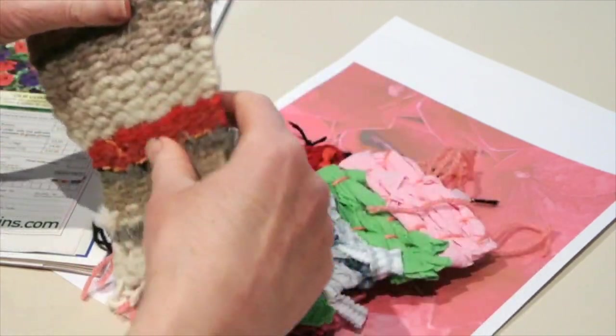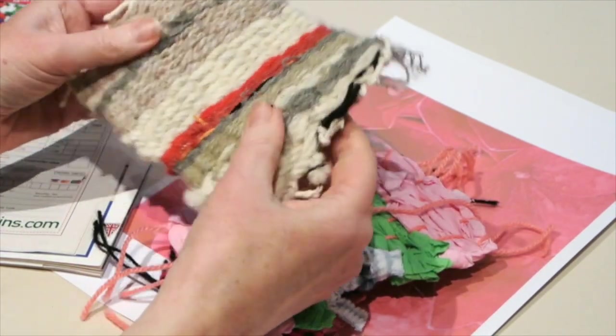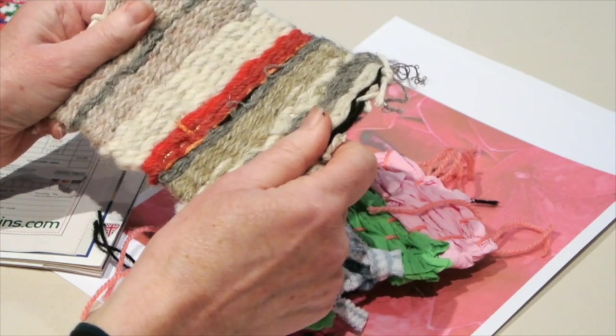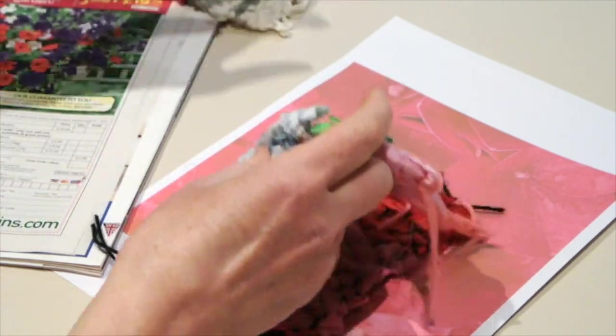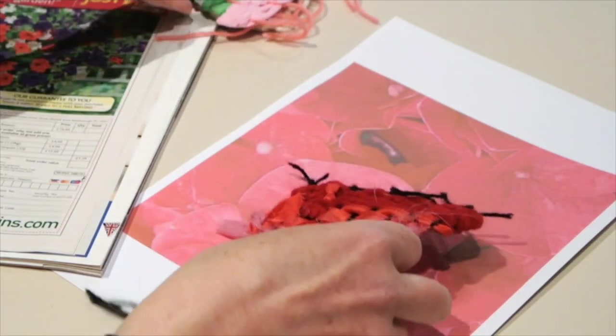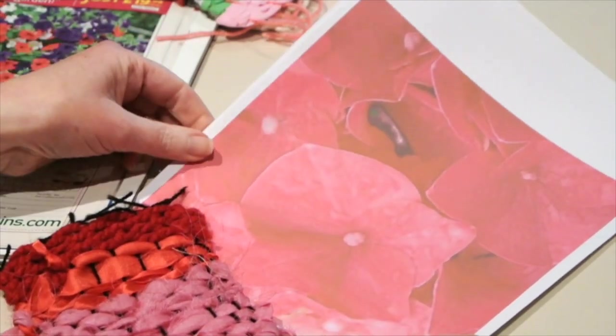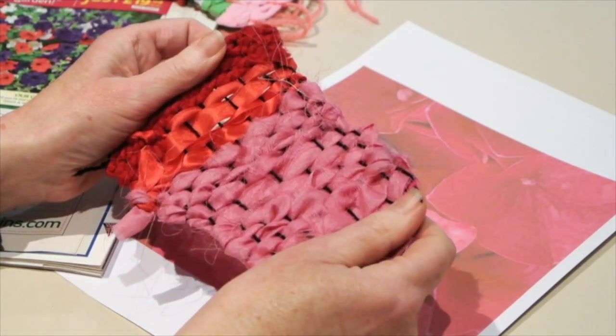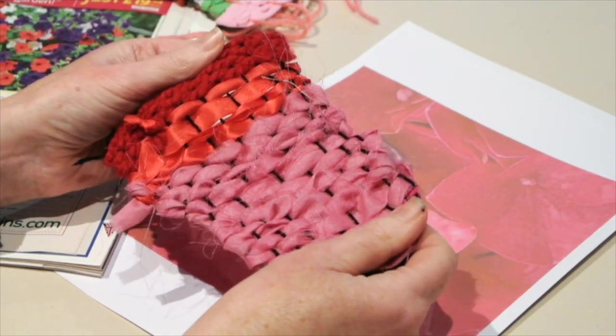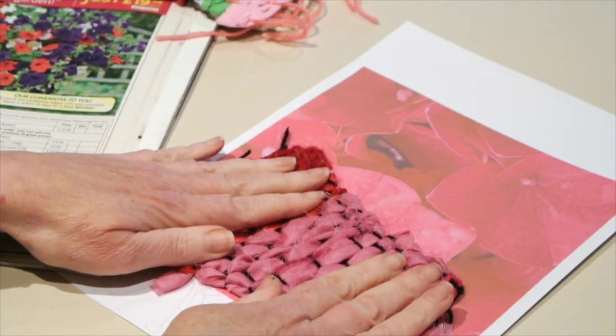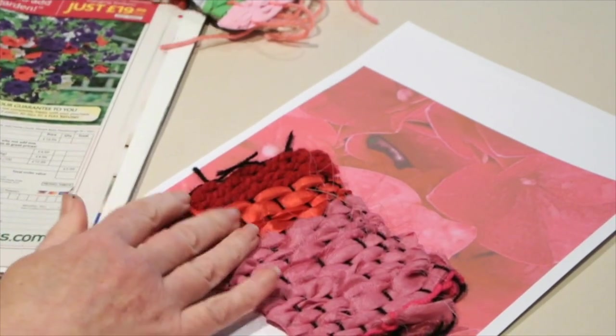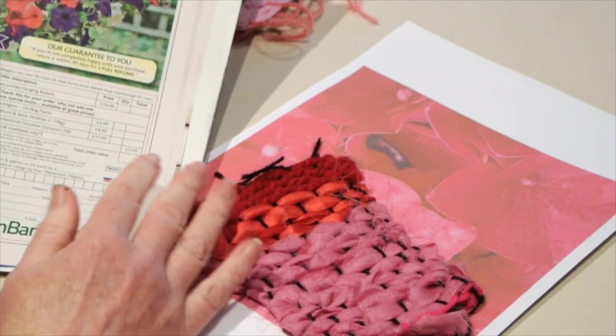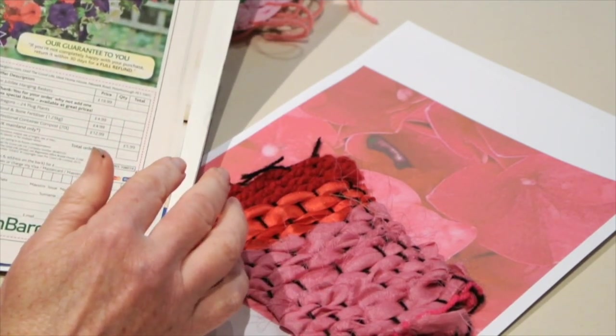Some of my weavings are just fabrics and wools that I've found and put together. Some are based on actual images that I've seen. This one was inspired by an image of pink flowers, and I used pink fabric, ribbon, and red wool to create it. You could look at magazines to find images or colours to inspire your designs.